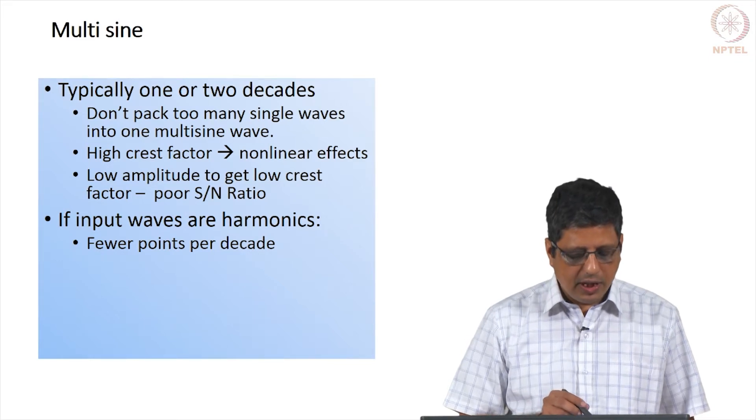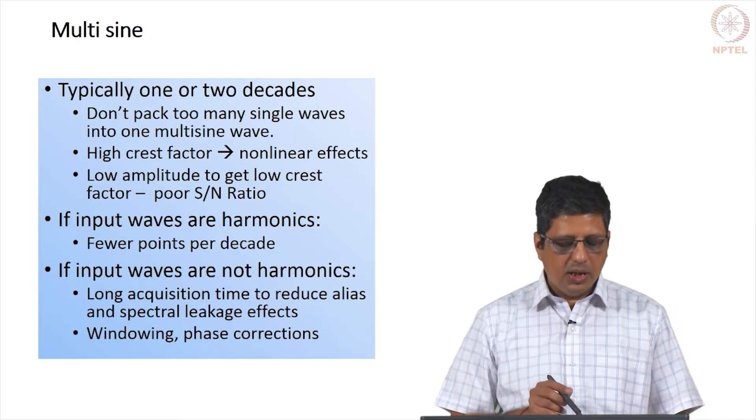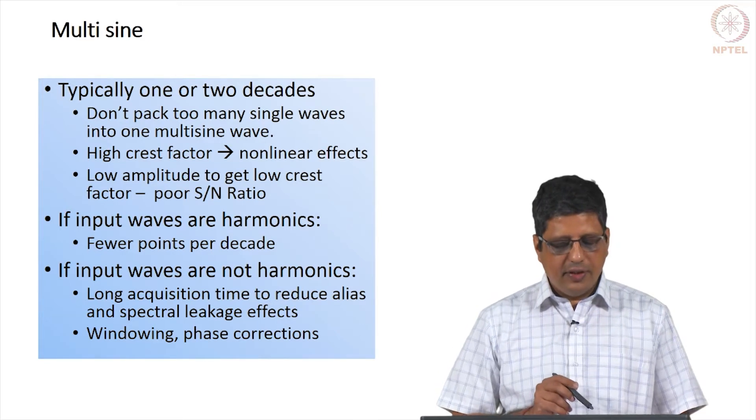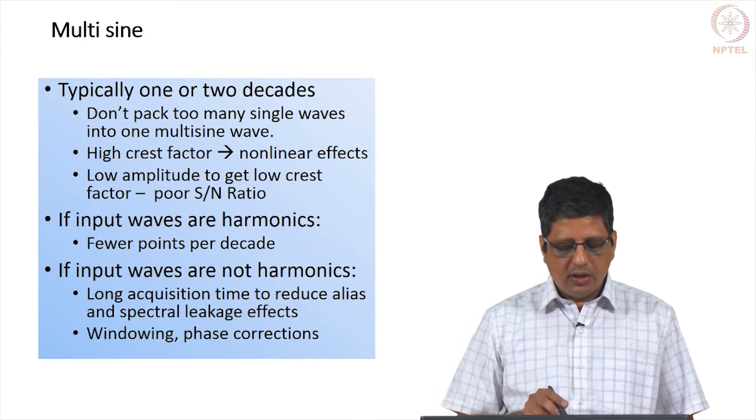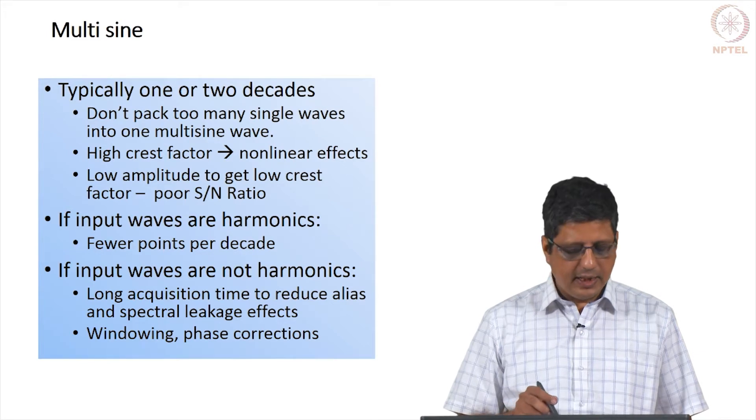So in summary, if the input waves are harmonic, you have fewer points per decade. If they are not harmonic, you have to either wait for long acquisition time and to acquire many, many samples to reduce the aliasing effect.